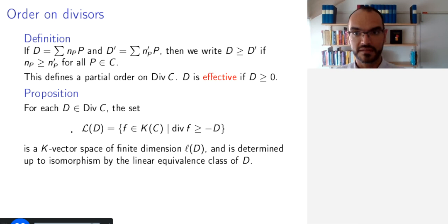Then, we will define this object. So, first, let's look at it, and then let's see what it means intuitively. So, for each divisor, we set L(D) to be the set of all rational functions on the curve, such that the divisor of this function is greater than or equal to minus D.